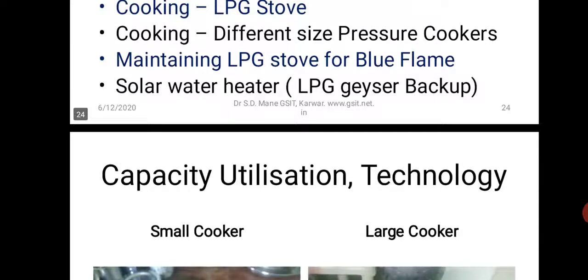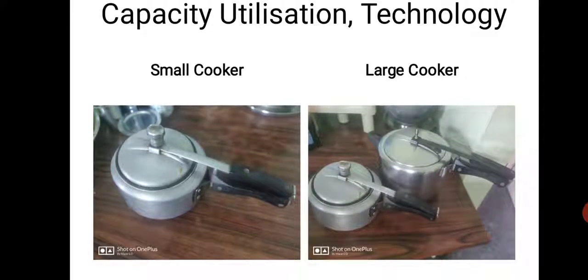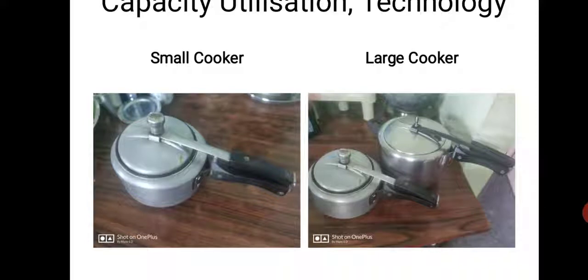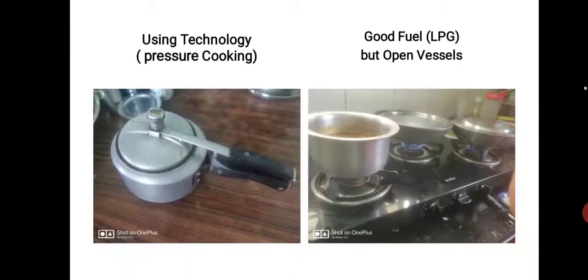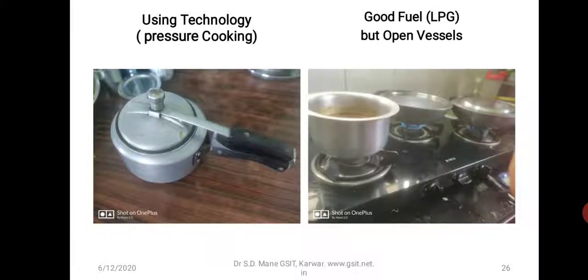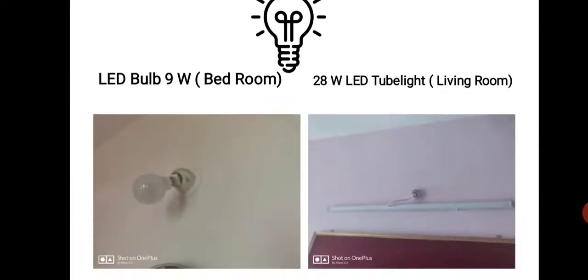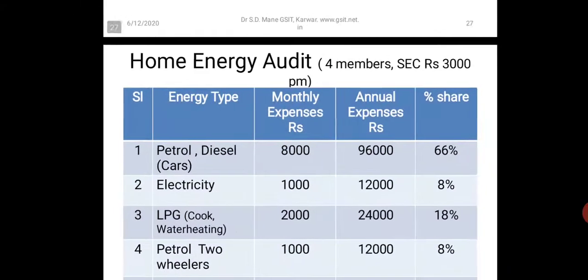We use LPG cooking stove — a clean burning fuel compared to earlier kerosene or wood. We use different size pressure cookers depending on how many people are cooking — three-liter, five-liter, eight-liter cookers are available. We keep the LPG flame blue, not yellow — a blue flame means the burner is burning efficiently. We also have a solar water heater with LPG geyser backup. A pressure cooker saves fuel and is a one-time investment of about 1,000–1,500 rupees but saves money in the long run.